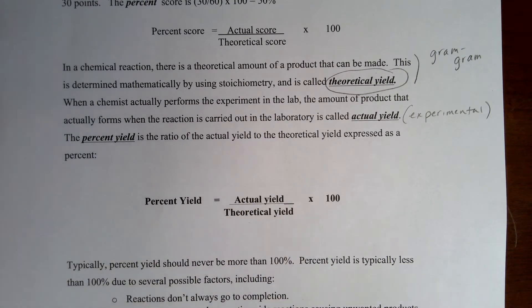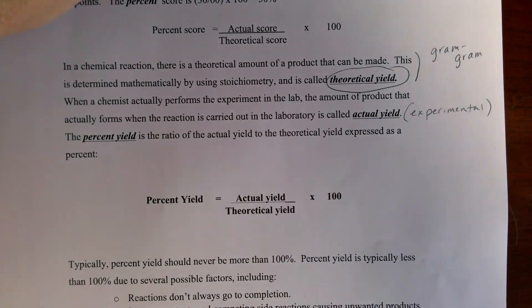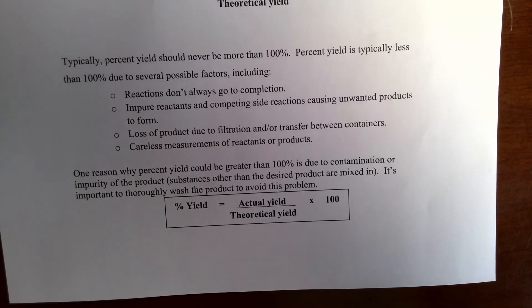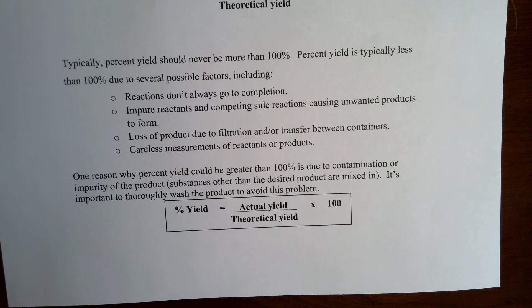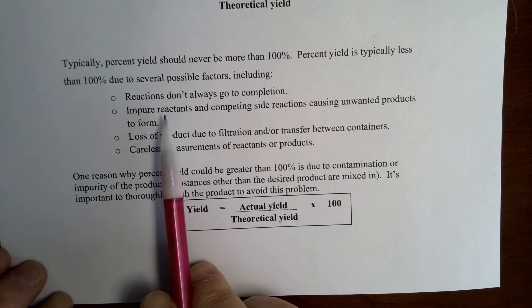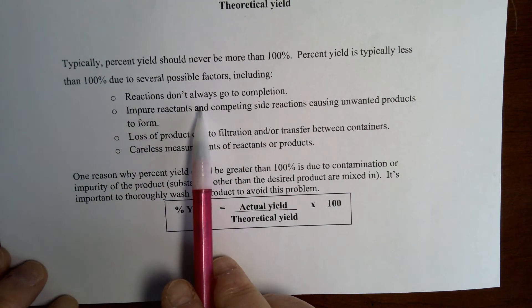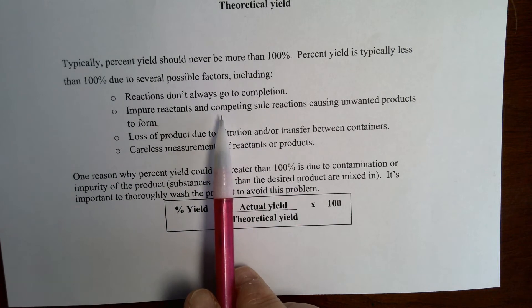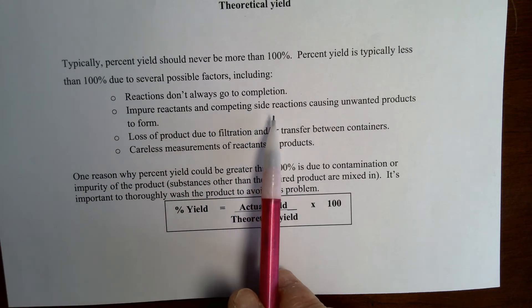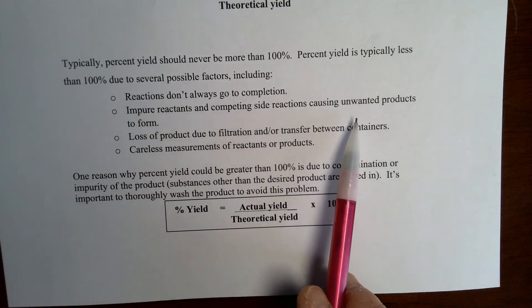Now, typically, percent yield should never be more than 100 percent. It is typically less than 100 percent due to several possible factors, including reactions don't always go to completion. Impure reactants that you started with possibly means that there are competing side reactions that cause unwanted products to form.